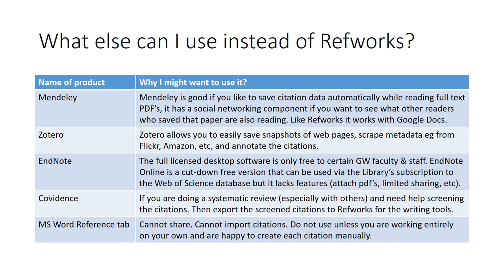If you're doing a systematic literature review and working with collaborators, Covidence can help. Covidence is one of our databases and it helps with screening citations for a literature review. You would import the references into Covidence rather than RefWorks first to do the screening, and then export just the screened citations to RefWorks to use with the writing tools when writing the manuscript.